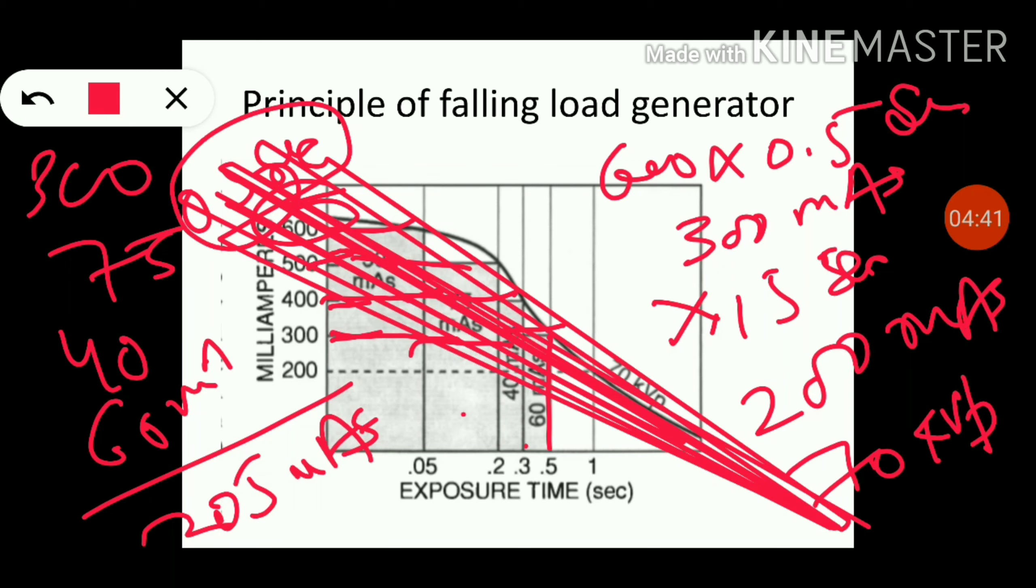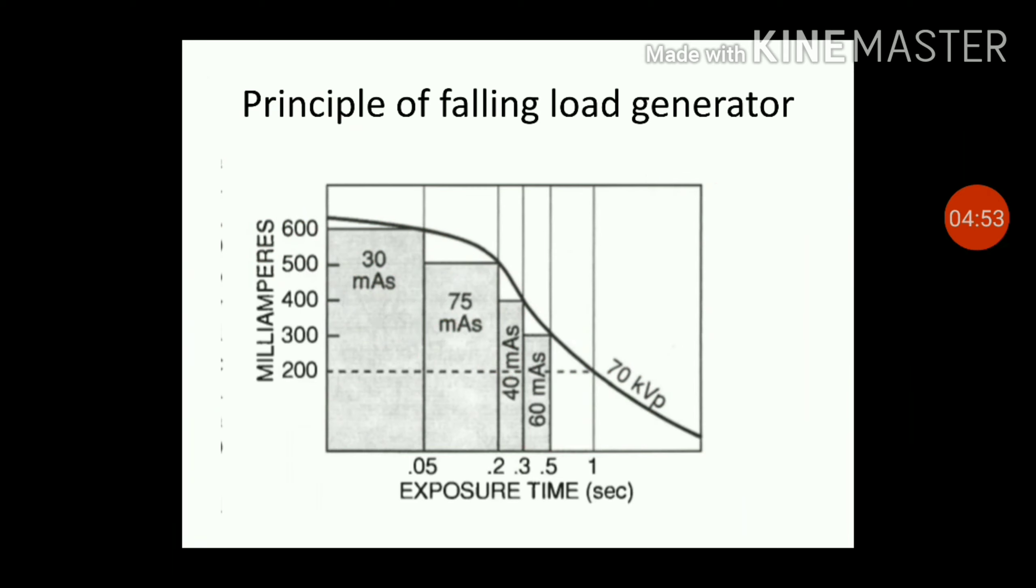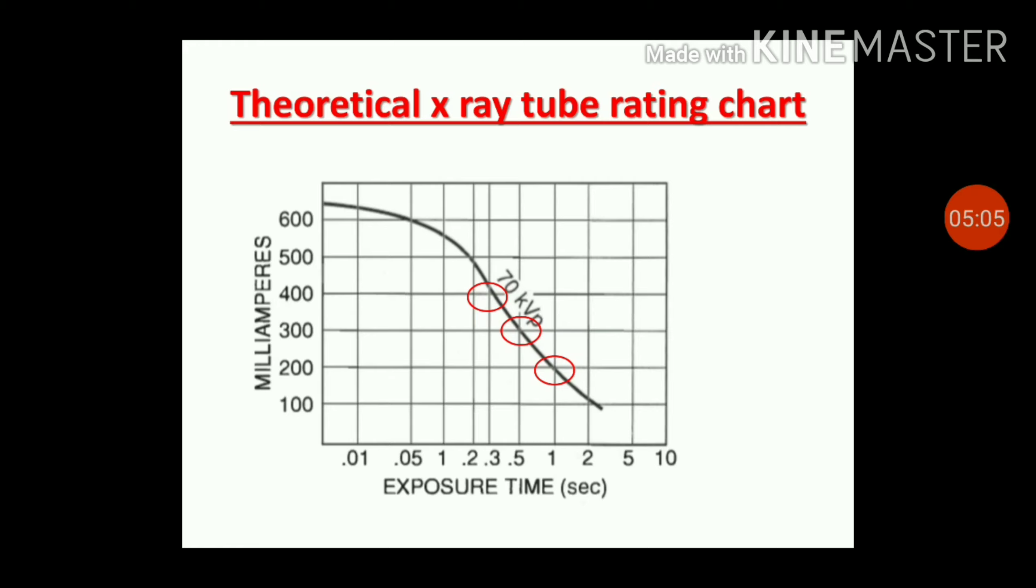This is how we can get the minimum exposure time at 200 mAs - by operating the X-ray tube at its maximum tolerance. Falling load generators produce 200 mAs in 0.5 seconds instead of 1.0 second for a fixed mA technique.